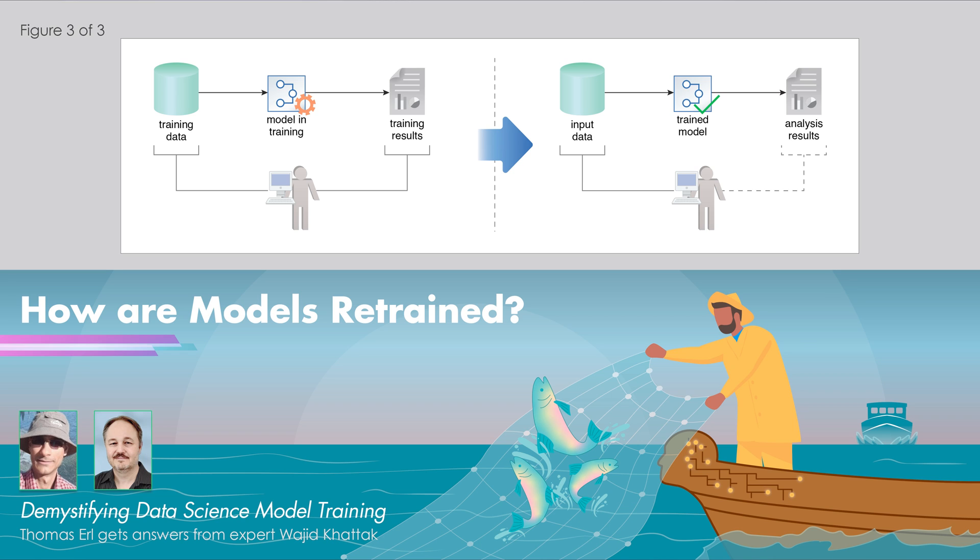As long as the nature of the problem that we were originally tasked with doesn't change, then normally you won't make that kind of quantum jump. If it is a supervised learning task, you would still choose an algorithm within that supervised learning area.